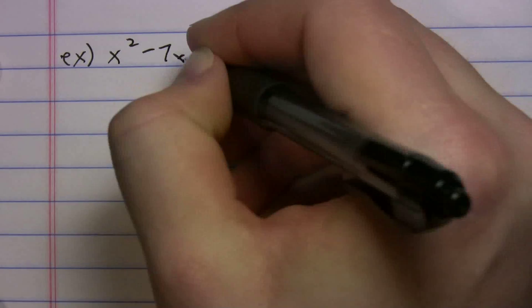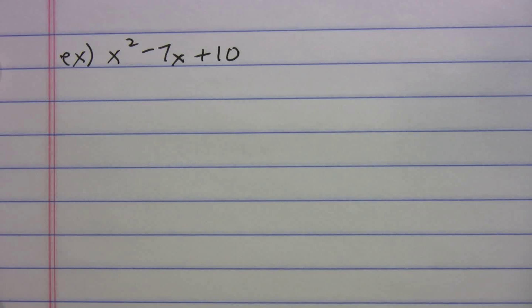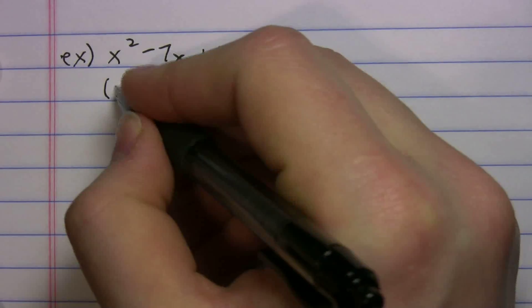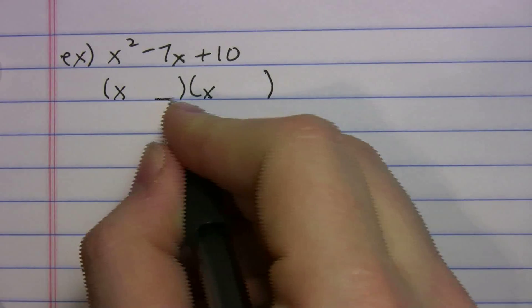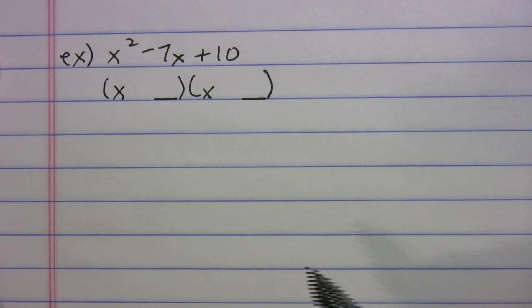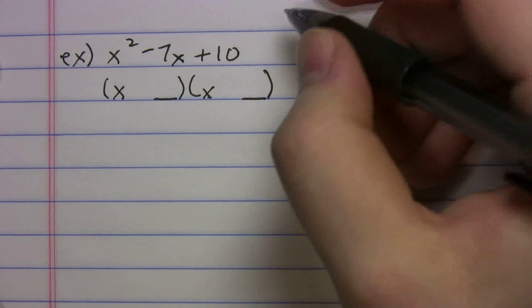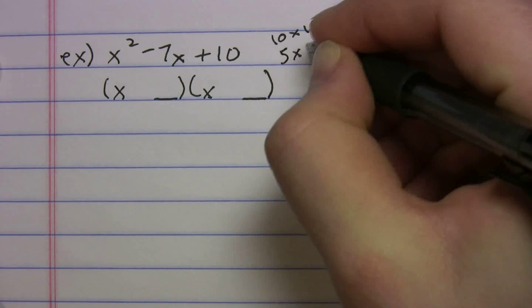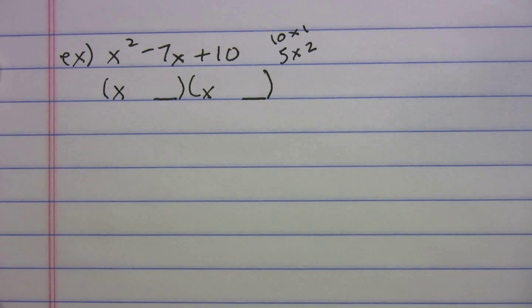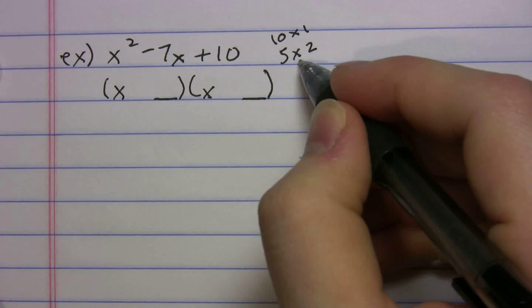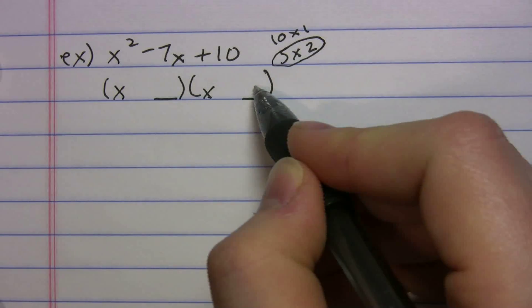Let's do another example — you can pause the video and try this on your own: x² − 7x + 10. Step one: put your double bubble down. Step two: put in your x's. Step three: figure out the last terms that multiply to 10 and add to −7. You can do 10 × 1 or 5 × 2. If you said 5 times 2, you're correct — there's no way a 10 and 1 could ever give you negative 7.